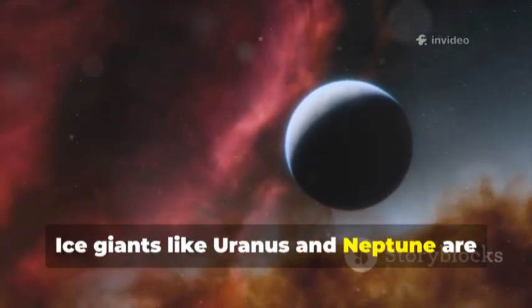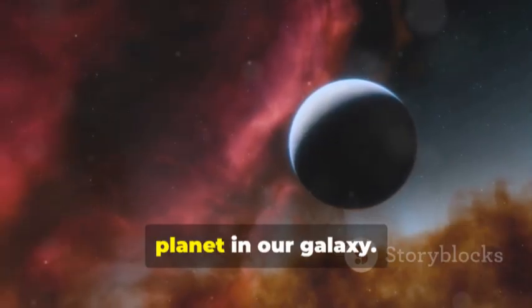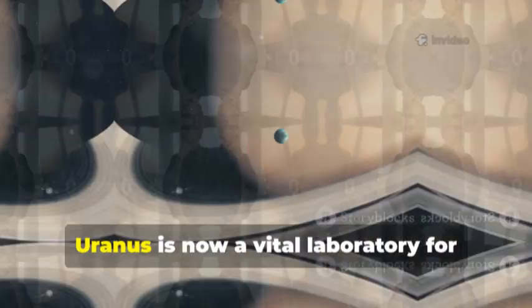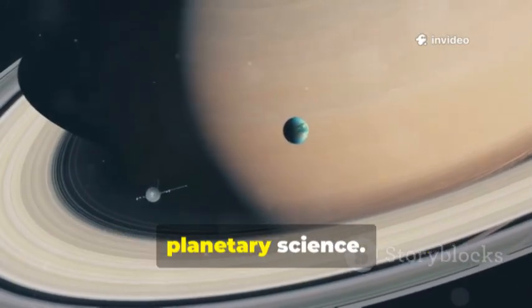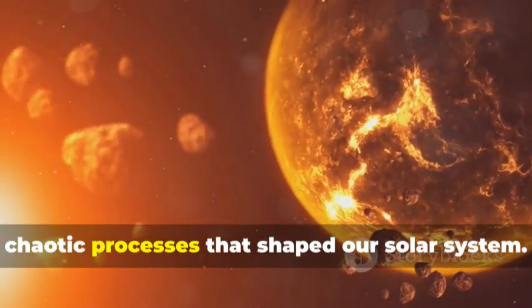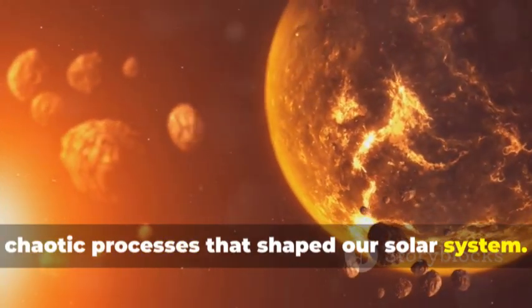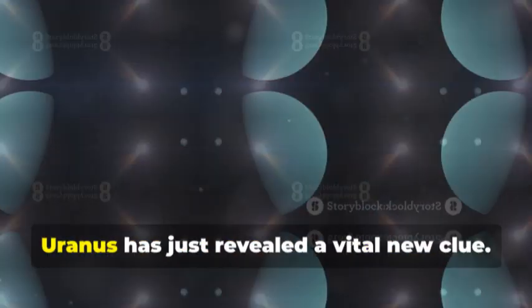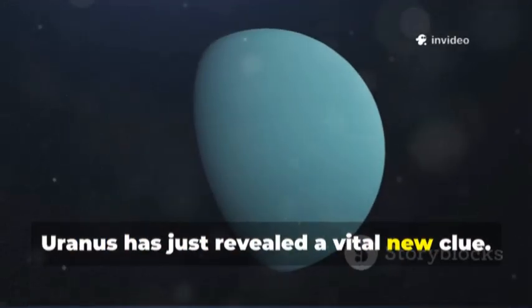Ice giants like Uranus and Neptune are now thought to be the most common type of planet in our galaxy. Understanding our local examples is crucial for understanding thousands of others. Uranus is now a vital laboratory for planetary science. By studying Uranus we learn about the violent chaotic processes that shaped our solar system. The history of one planet can tell us about the history of all. Uranus has just revealed a vital new clue.